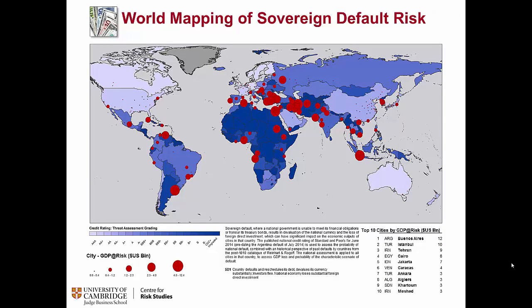This is an illustration from the Cities at Risk project, where we have categorized various countries based on their credit ratings, and also shown the risk according to the GDP at Risk measure, which was discussed in the earlier presentation.